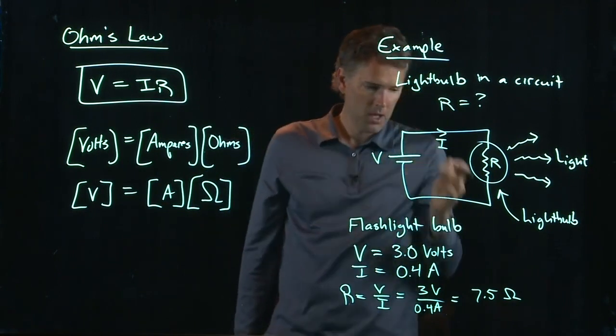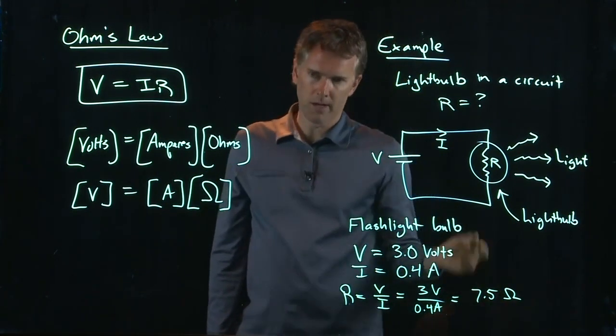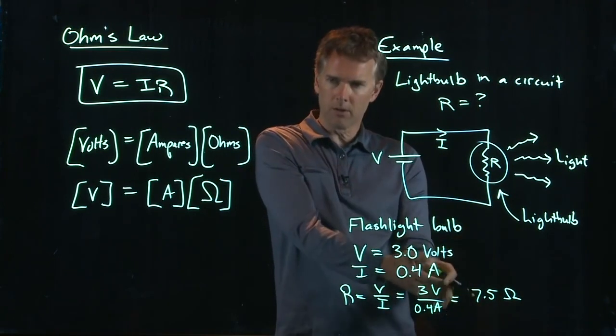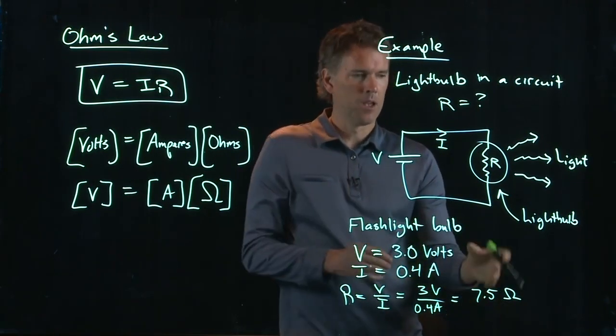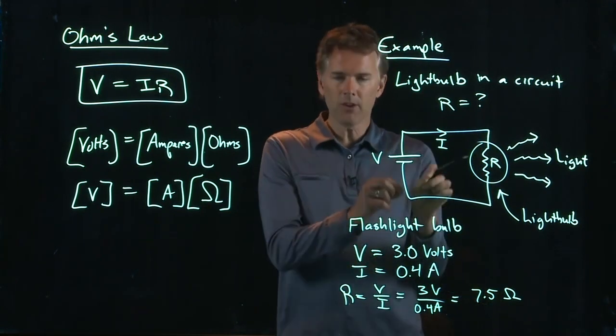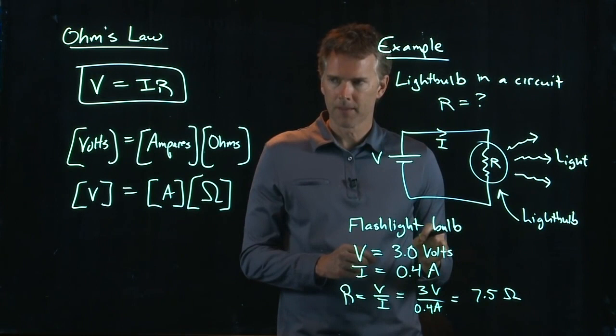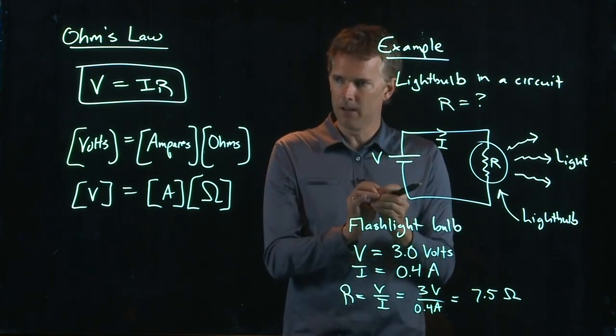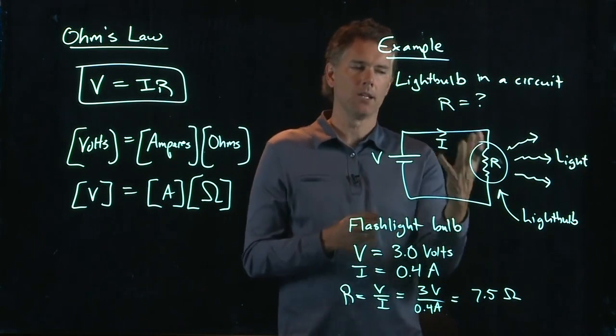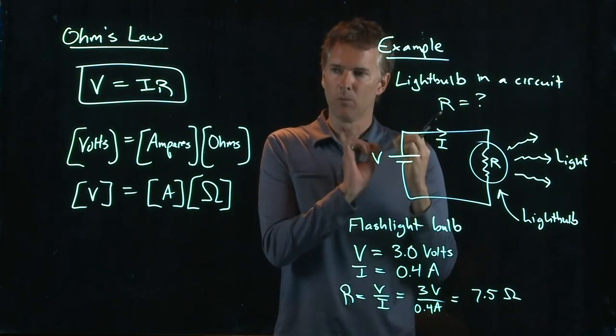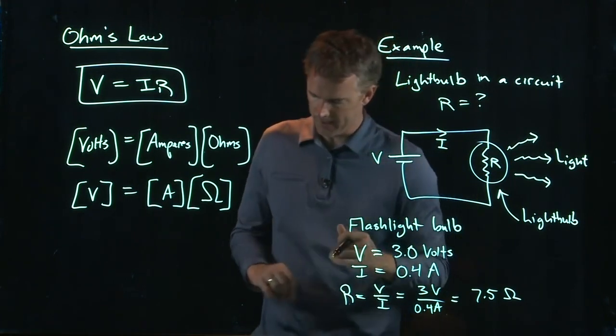And that means we're going to get a resistance of 7.5 ohms, which is pretty small. When you guys were playing with circuits in the lab, you were dealing with hundreds of ohms, thousands of ohms. A light bulb has a very low resistance because it's essentially a piece of wire. It's a little piece of wire that you run current through, and that thing gets hot. You're not trying to necessarily impede the current. You're trying to get that thing to get really hot, and so it will emit light.